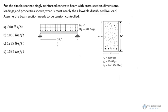We're given a beam here. We've got a 30-foot span. We've got a superimposed dead load of 640 pounds per foot. We've got a superimposed live load, which we're trying to solve for, and of course we'll have the self-weight of the beam. Given the section properties, the beam is 12 inches wide, 24 inches deep. Our effective depth, D, equals 22 inches.